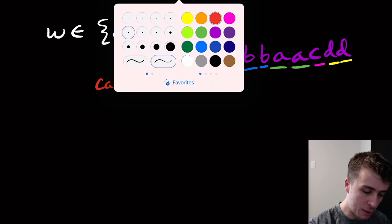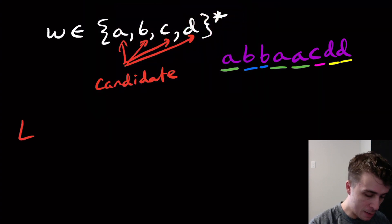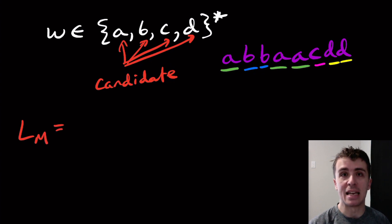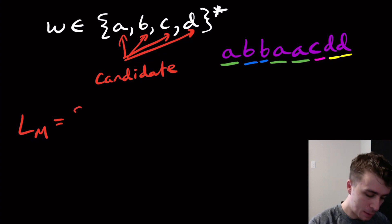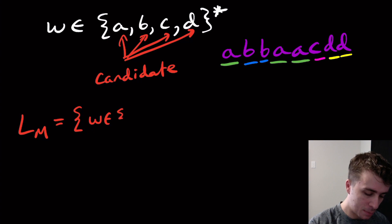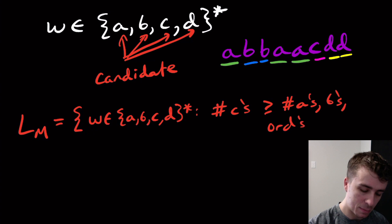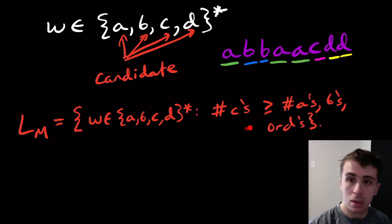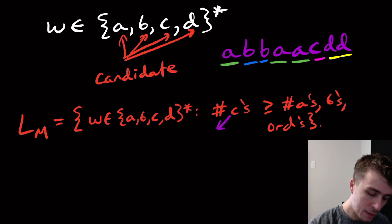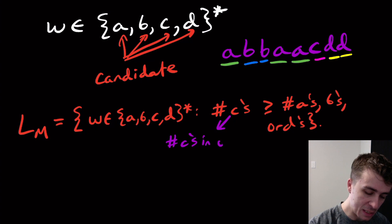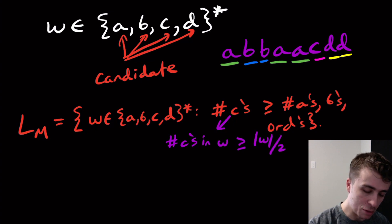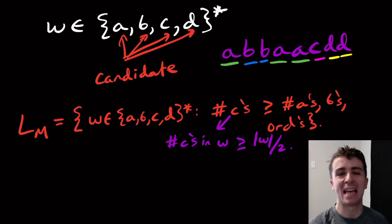So there are actually two different ways of thinking about this problem. I'm going to have L_M be the language where candidate C won — specifically, this is the set of all strings in {A,B,C,D}* where the number of C's is at least the number of A's, B's, or D's combined. In other words, C got at least half of the votes.